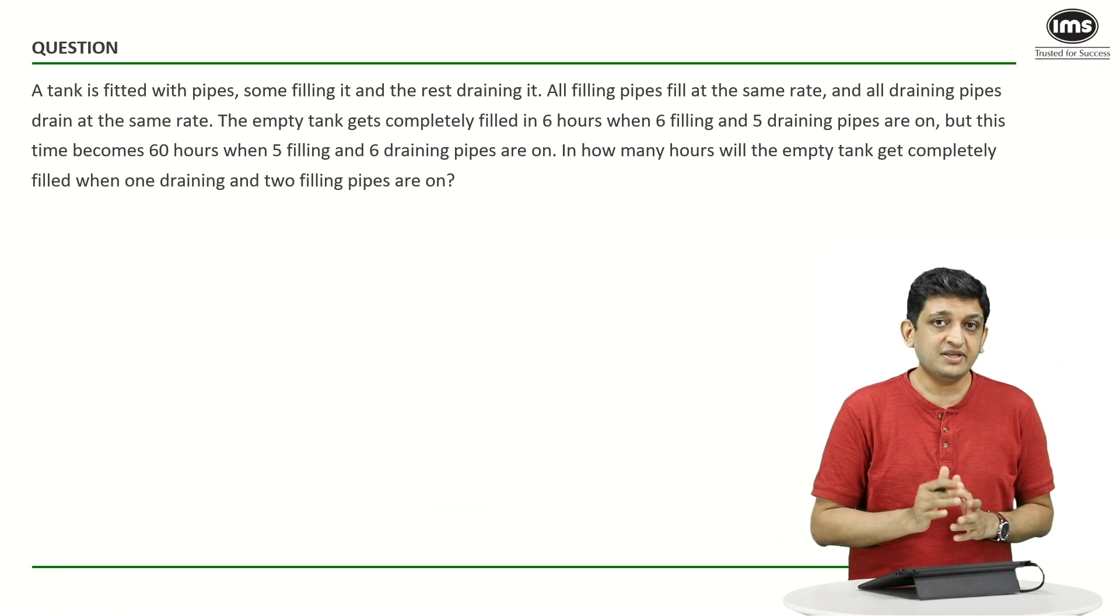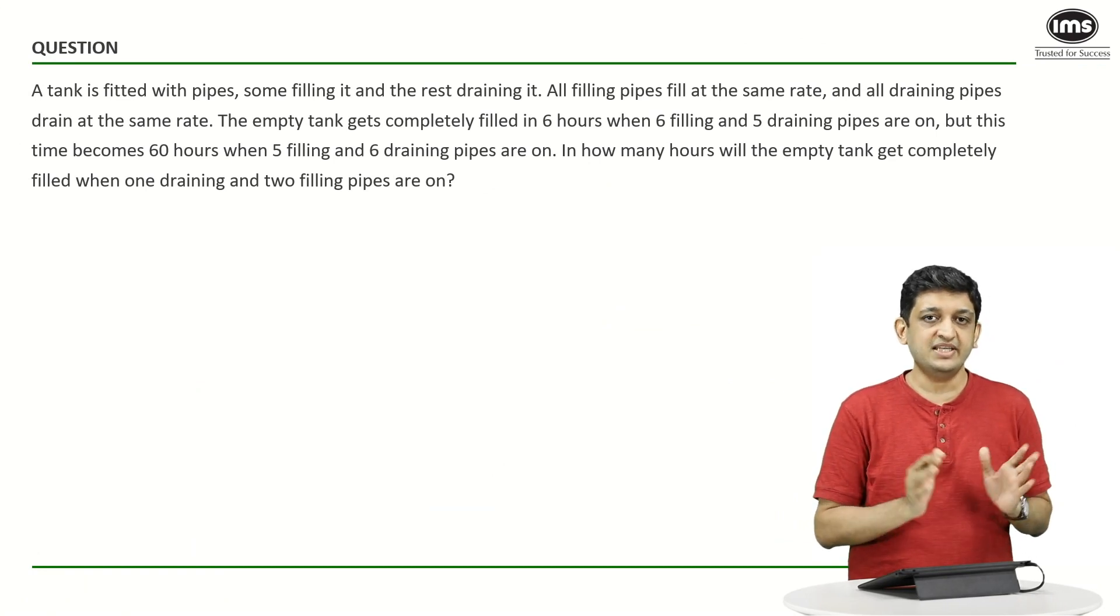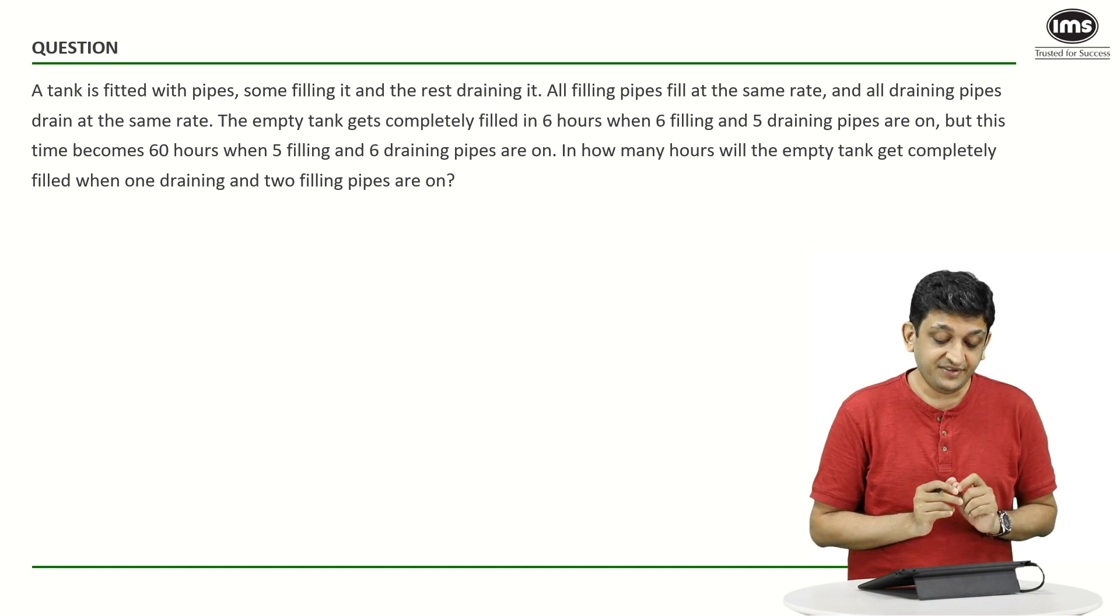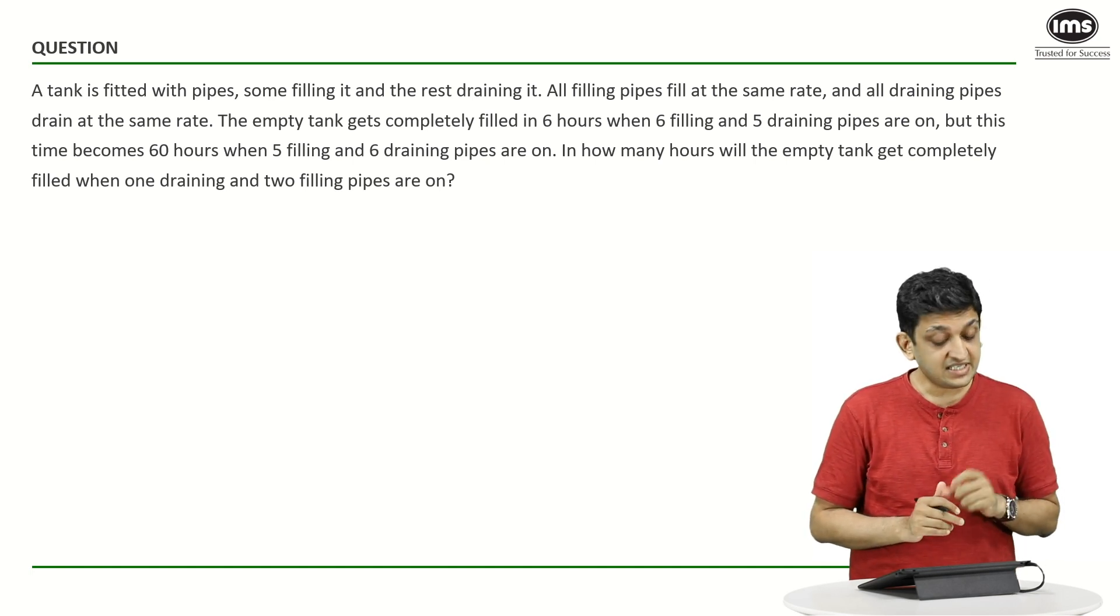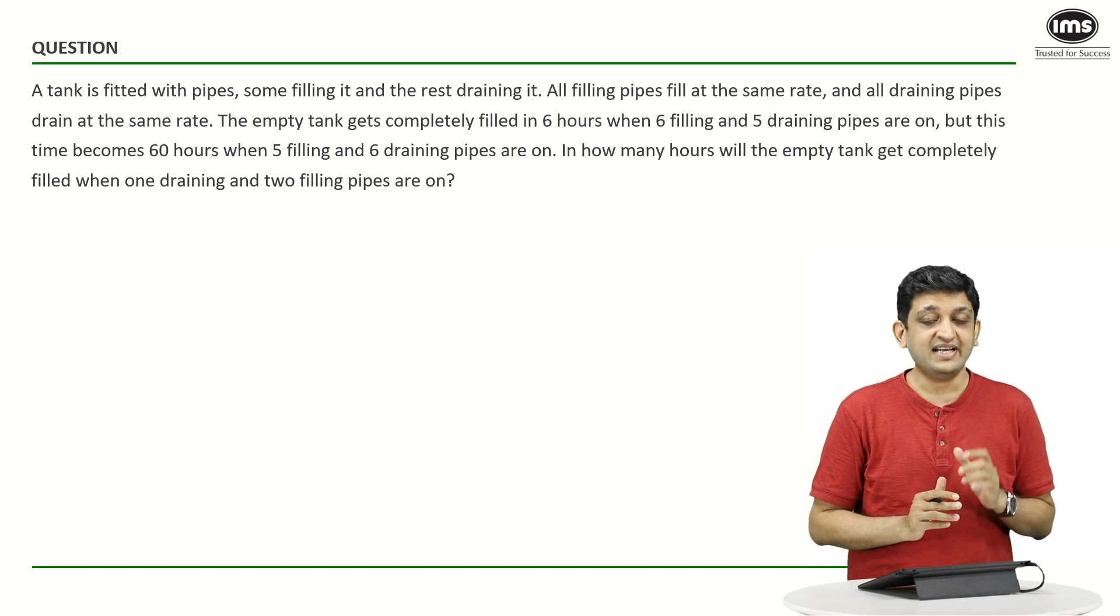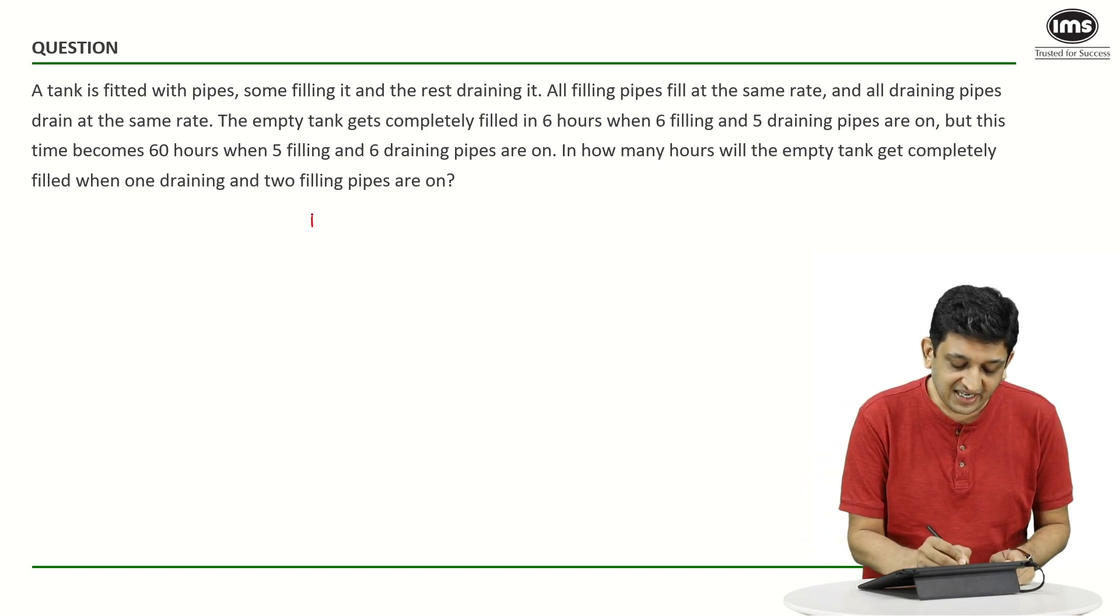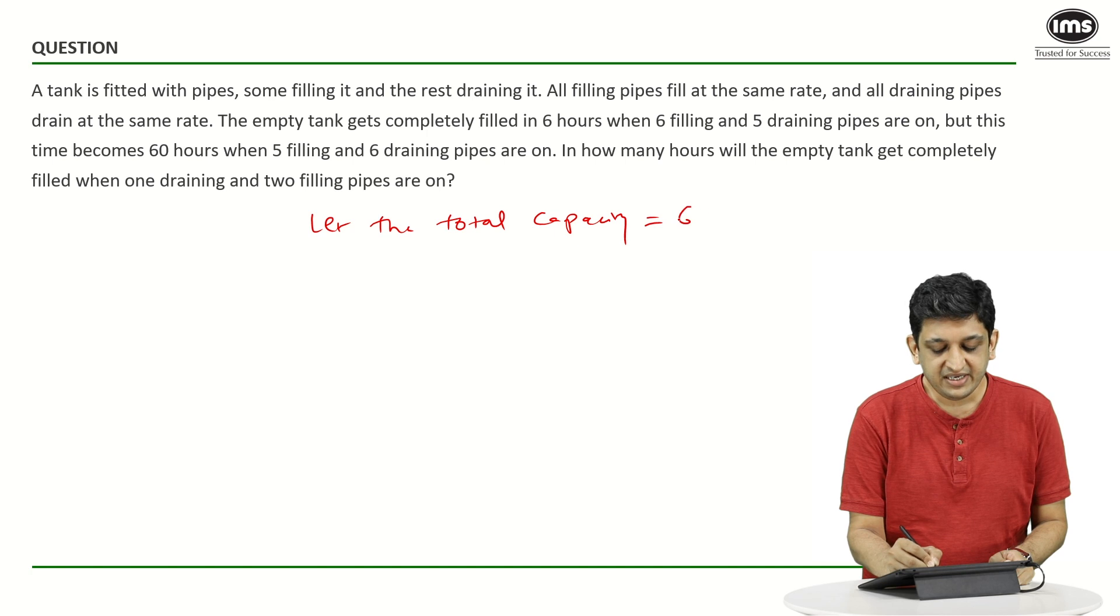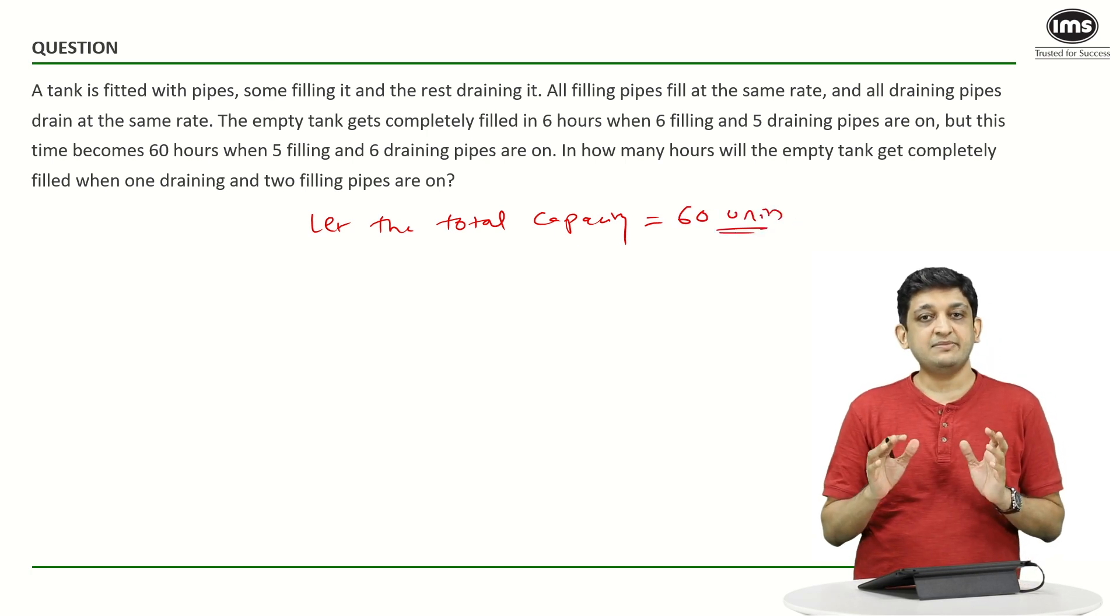So, in the unitary method, you are expected to take something or assume something as the capacity of the tank. Now, because the first set that we have here is filling the tank in 6 hours and the second set is filling the tank in 60 hours, we can say that let the total capacity of the tank be 60 units.